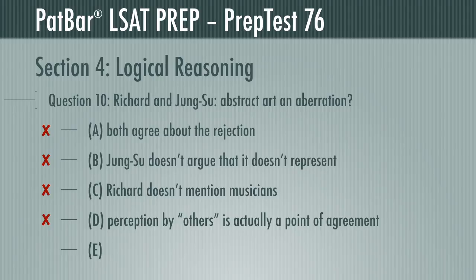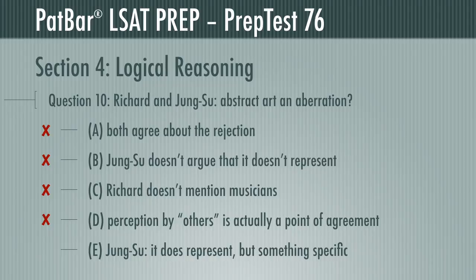Richard argues that abstract art doesn't represent. Jung Soo argues that it does represent, but represents the formal features of an object in place of the everyday perspectives. E is the point of contention and the correct response.